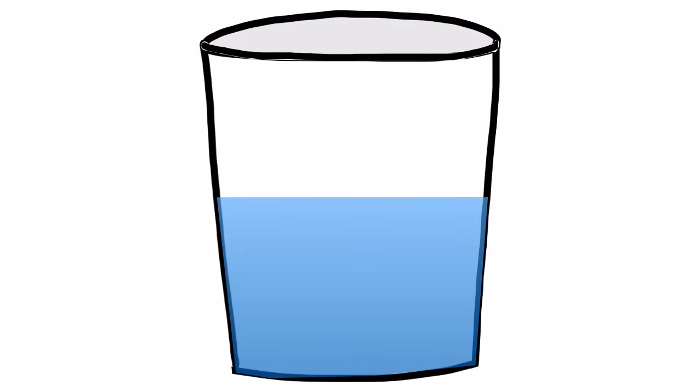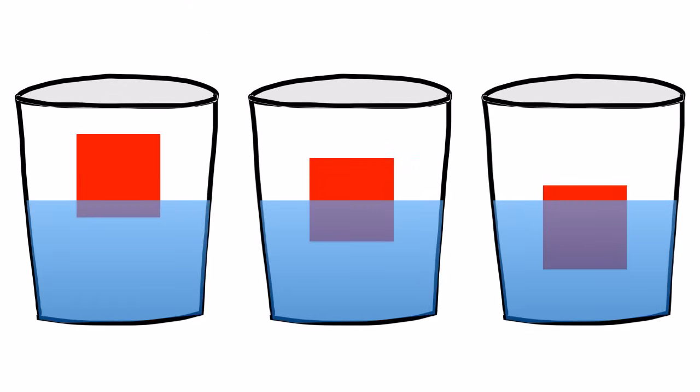The density of liquid water is one. Objects with a density of less than one will float, and objects with a density greater than one will sink. Take a look at these three objects. All of them float, so their densities are less than one.